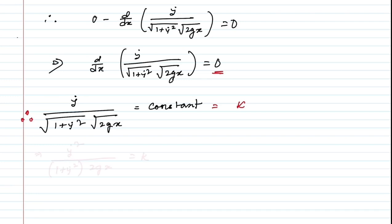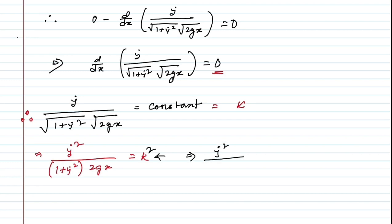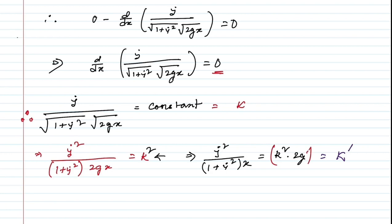Squaring and simplifying: ẏ² / [(1 + ẏ²) · 2gx] = k². Solving for ẏ²: ẏ² = (1 + ẏ²) · 2gx · k². Letting k² · 2g = k′ (another constant) and simplifying, we arrive at an expression for ẏ².